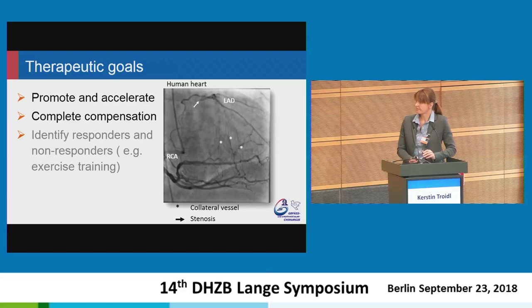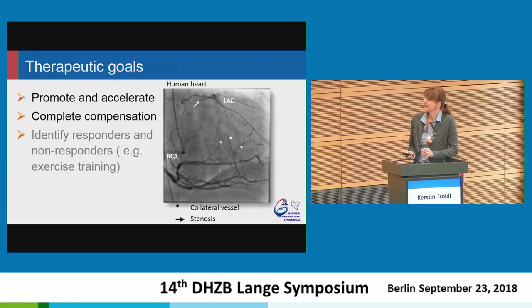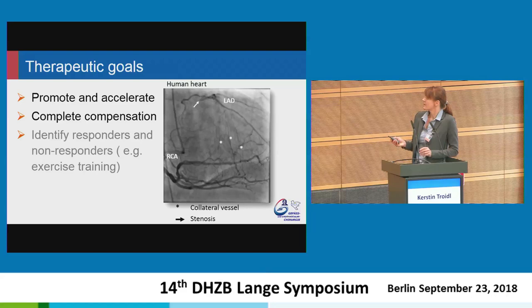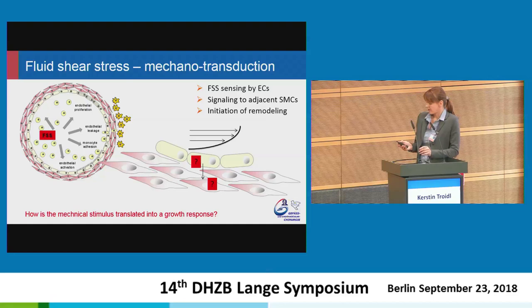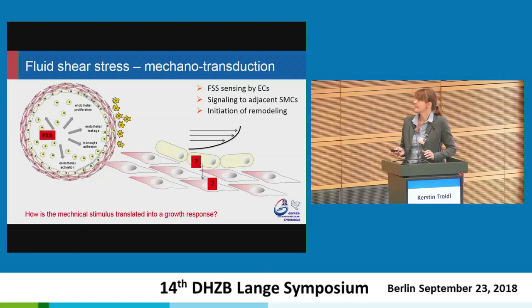We are also interested in identifying responders and non-responders to exercise training in patients, but that is not my focus today. Accelerated compensation is especially important in heart disease, because we also have collateral arteries in the coronary circulation, which requires even faster compensation. The cellular events are quite well understood, but what is still under investigation is how the mechanical stimulus is translated into a growth response — specifically, how endothelial cells sense fluid shear stress, transduce the signal into adjacent smooth muscle cells, and why the initiation of remodeling takes place.